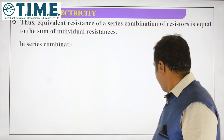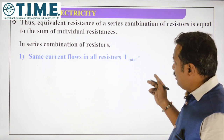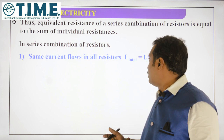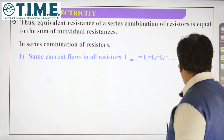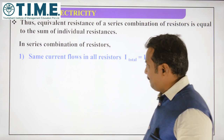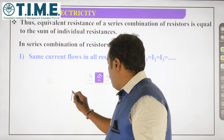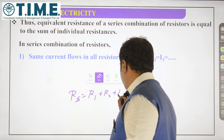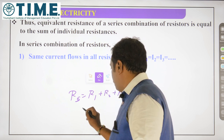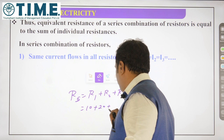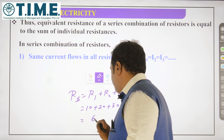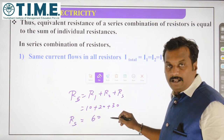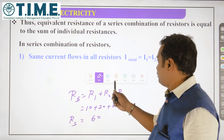In series combination, the effective resistance will be greater than the greatest resistor. For example, RS = R1 + R2 + R3 = 10 + 20 + 30 = 60 ohm. The greatest individual resistor here is 30 ohm, and the effective resistance 60 ohm is indeed greater than 30 ohm. This is an important concept.